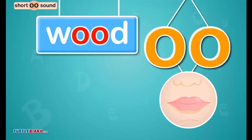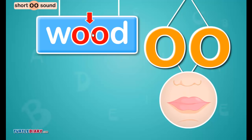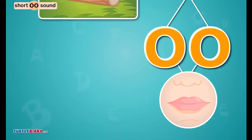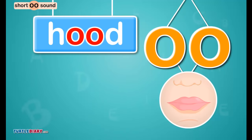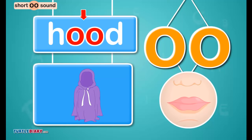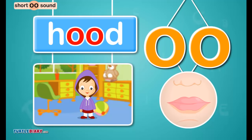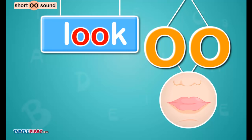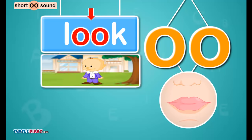Click on the letter that makes the ʊ sound. Wood. Click on the letter that makes the ʊ sound. Look.